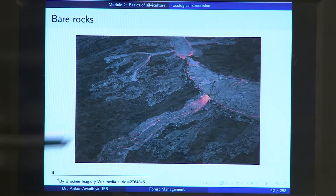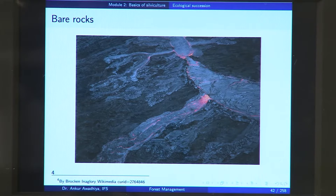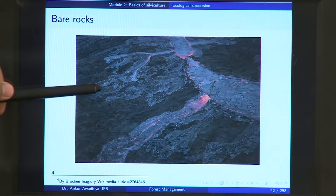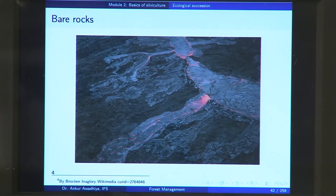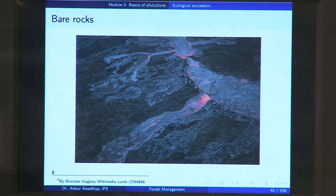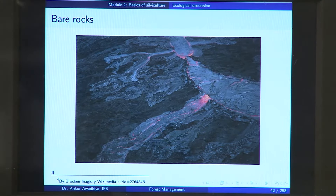These rocks, because they are so hard, are not able to support anything. Even though these rocks have the minerals that can support plant life, because these minerals are embedded inside these rocks, they are not made available to the trees. If you try making a hole in this rock and put a seed inside, this seed will not turn into a tree. But certain phenomena happen on these rocks that convert this completely barren land into a forest.